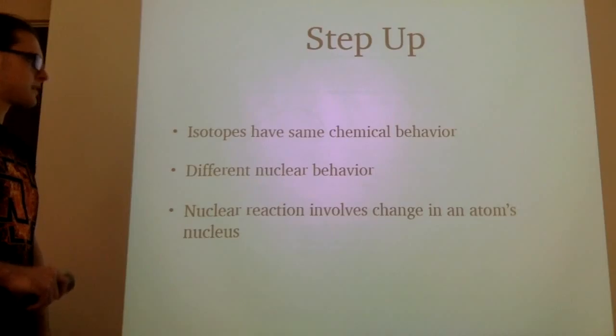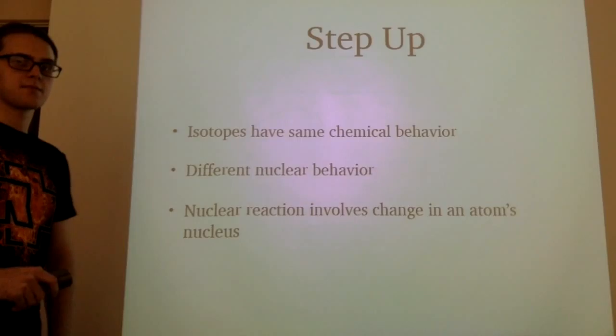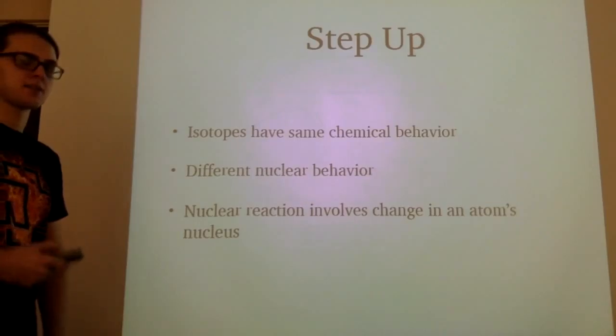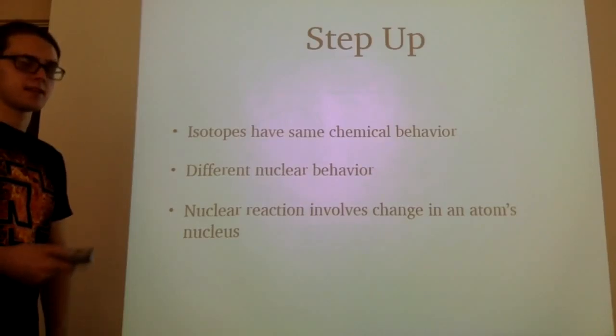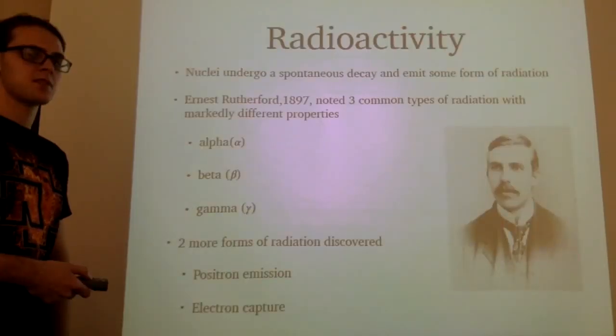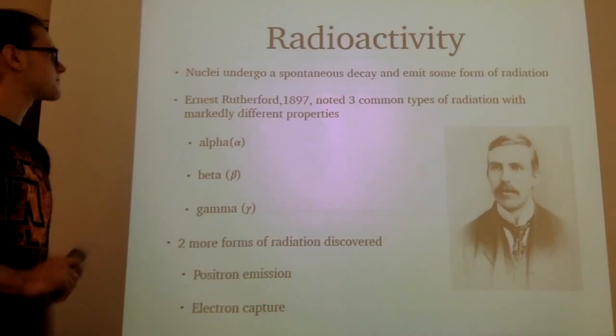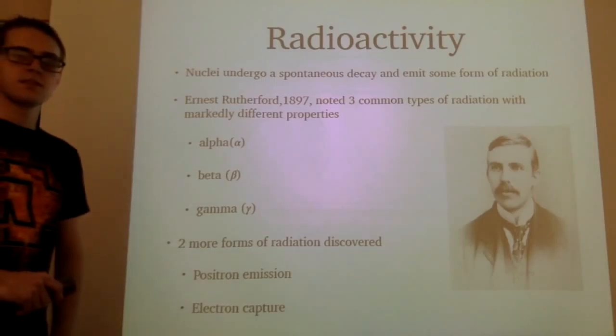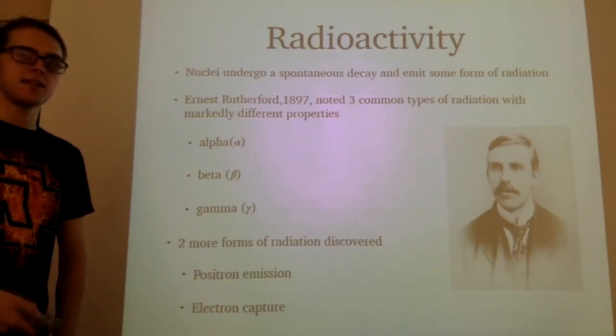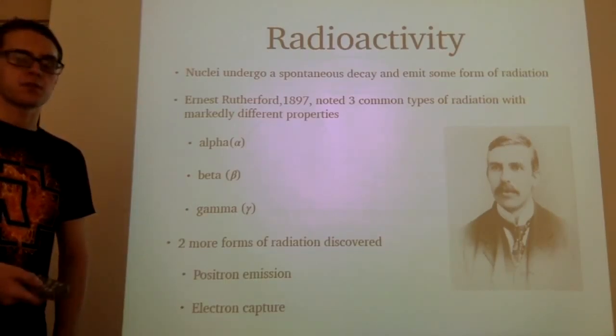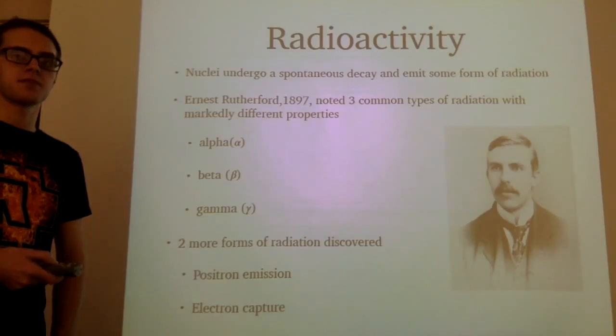Now that we've looked at chemical reactions, nuclear reactions are going to involve an atom's nucleus, so that's the protons and neutrons that are differing. With different nuclei, we get different stabilities, some more stable than others, whereas unstable ones we call radioactive. For radioactivity, nuclei undergo spontaneous decay and form some type of radiation.